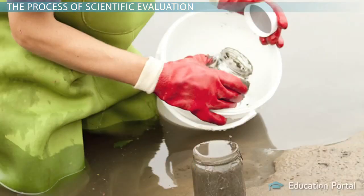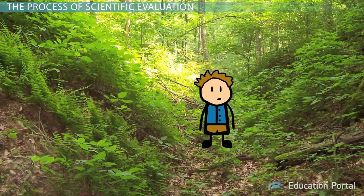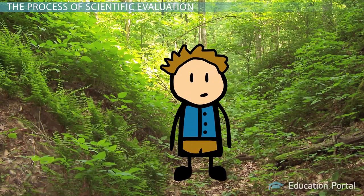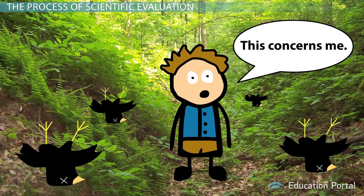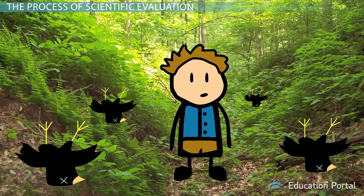Although science can be used to solve many different types of problems, let's examine how scientific evaluation can be used to help solve an environmental problem. Imagine you are walking through the forest and you notice multiple dead birds. This might alarm you and raise concern about why so many birds are dying in one area. In order to investigate and solve this issue, a scientific evaluation of the environmental problem would be conducted, and it would involve five major steps.